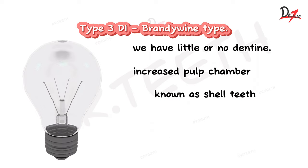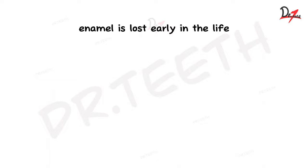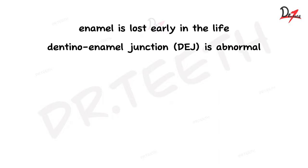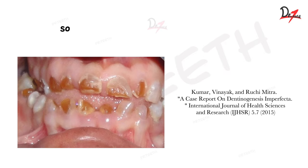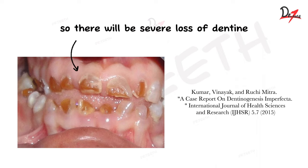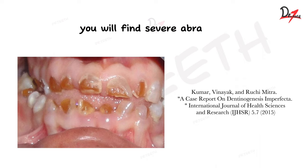Enamel in Dentinogenesis imperfecta is normal, but it is lost early in life due to poor bonding between enamel and dentine. The dentino-enamel junction (DEJ) is smooth and flattened rather than scalloped with crisscrossing and entangling, which normally provides a good bond. Because dentine is softer than enamel, once enamel is lost there is severe loss of dentine as well. Clinically, many of these patients present with severe abrasions.